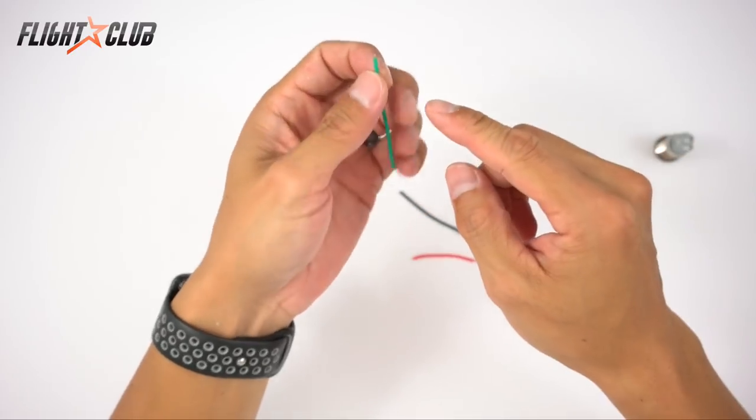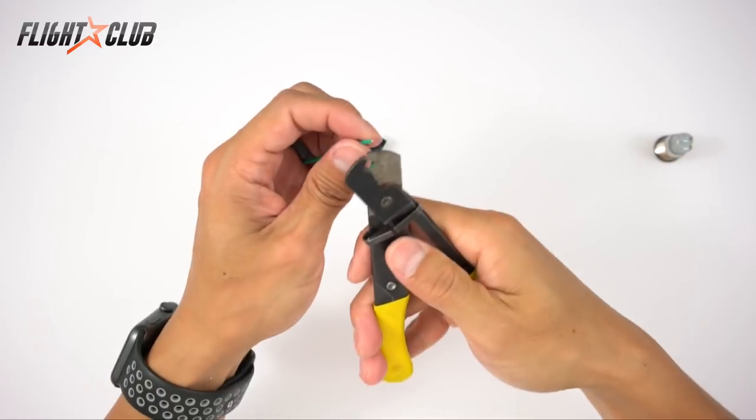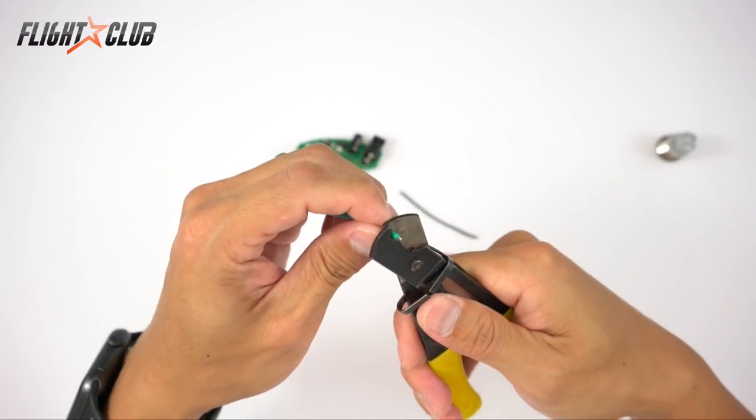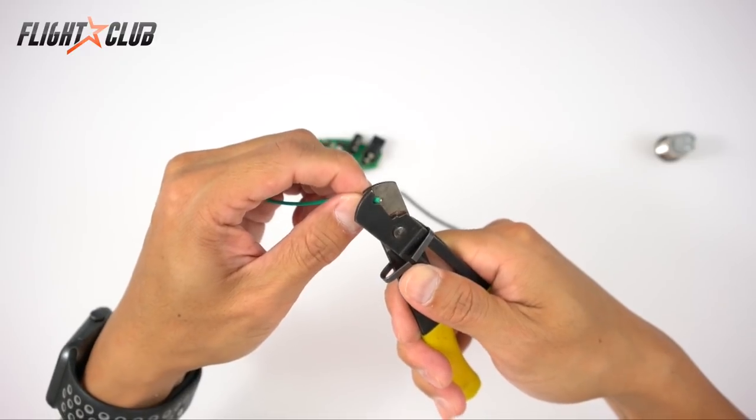Except on this green wire, you're going to splice it a little bit more than normal, say about half inch or so. I'll show you why later. So on the green wire, tin it a little bit more than normal.